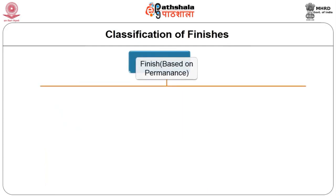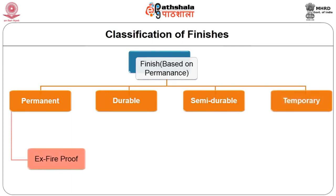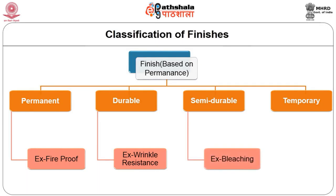Finishes can be categorized based on degree of performance as permanent, durable, semi-durable and temporary. Permanent finishes usually involve a chemical process, change the fiber structure, and last the life of the fabric — examples are waterproof or fireproof finish. Durable finishes last throughout the life of the article but effectiveness may diminish after each washing — examples are permanent pleats or wrinkle resistance. Semi-durable finishes last through several launderings or dry cleanings and then are removed — example is bleaching.